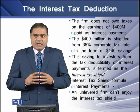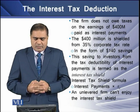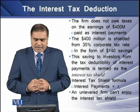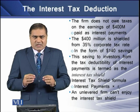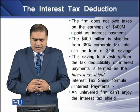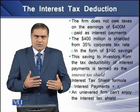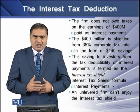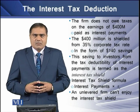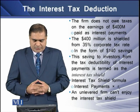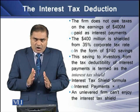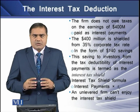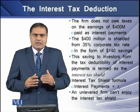Since the firm does not pay tax on the interest payment of $400 million, that amount is kept from being taxed at 35%, resulting in a tax saving of $140 million. This saving is the outcome of the interest tax deductibility attribute. The tax saving on interest admissibility as a business expense is termed the interest tax shield.